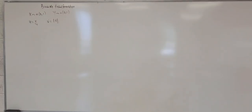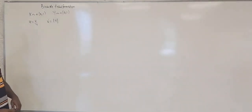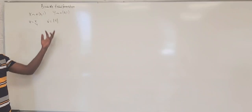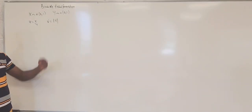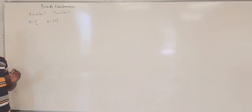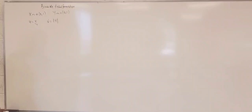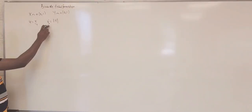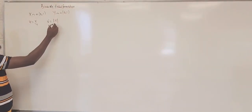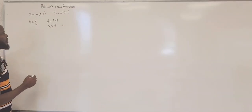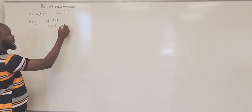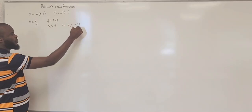We're going to continue from where we stopped yesterday. This is a bivariate transformation, and if you look at this bivariate transformation, we are having absolute value. So when you are having absolute value, your mind should go straight to two Jacobians — two Jacobians. Yeah, because your v can be positive y, you can call this v1, or your v can be negative y.